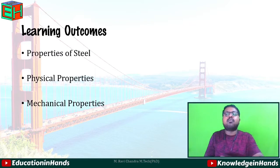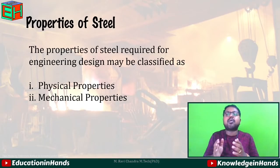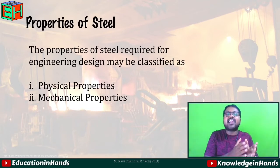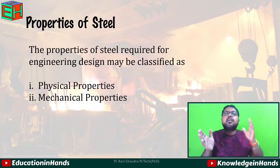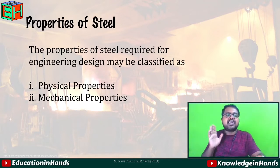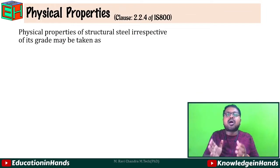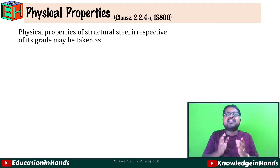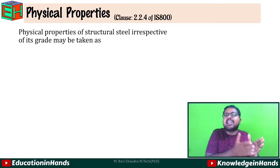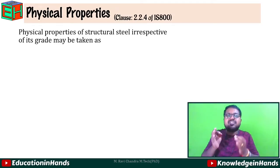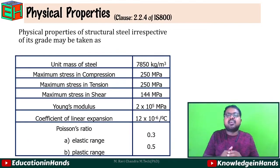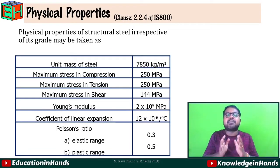First, what are the properties of steel? The properties of steel required for engineering design are classified as physical and mechanical properties. According to clause 2.2.4 of IS 800-2007, the physical properties of steel are given irrespective of its grade. The unit mass is equal to 7850 kg per meter cube.